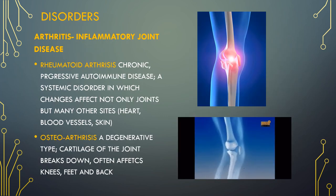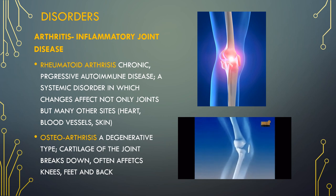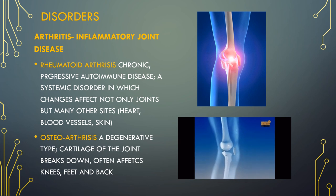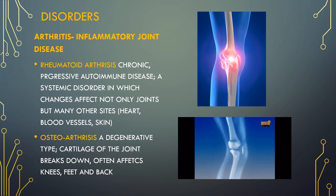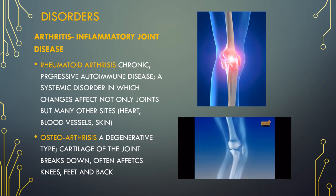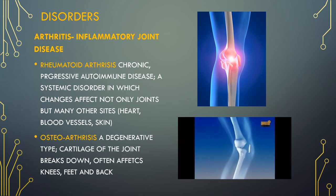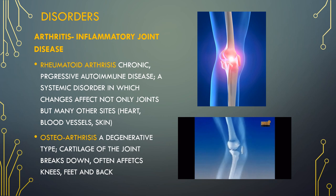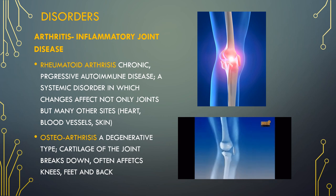Rheumatoid arthritis is an autoimmune disease that can cause joint pain and damage throughout your body. The joint damage that RA causes usually happens on both sides of the body. So if a joint is affected in one of your arms or legs, the same joint in the other arm or leg will probably be affected too. Osteoarthritis is the most common form of arthritis, affecting millions of people worldwide. It occurs when protective cartilage that cushions the ends of the bones wears down over time. Although osteoarthritis can damage any joint, the disorder most commonly affects joints in your hands, knees, feet and back.